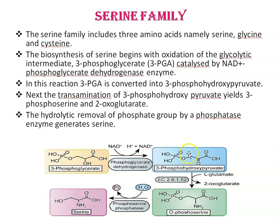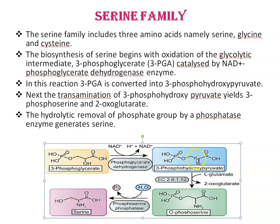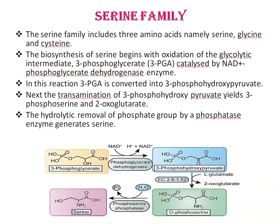Next is transamination. Transamination of 3-phosphohydroxypyruvate yields 3-phosphoserine and 2-oxoglutarate. And finally, hydrolytic removal of the phosphate group by an enzyme, phosphoserine phosphatase, generates serine.